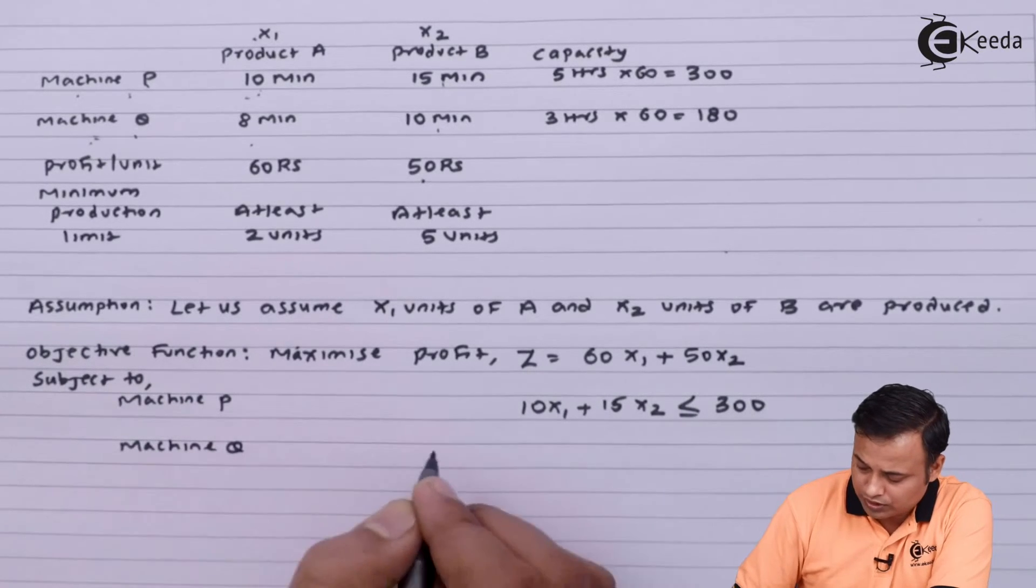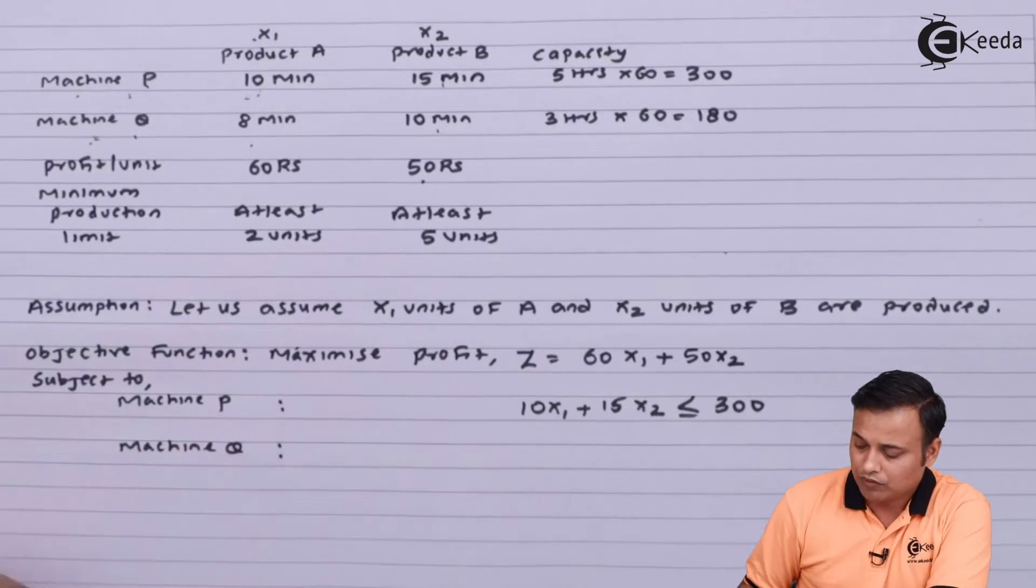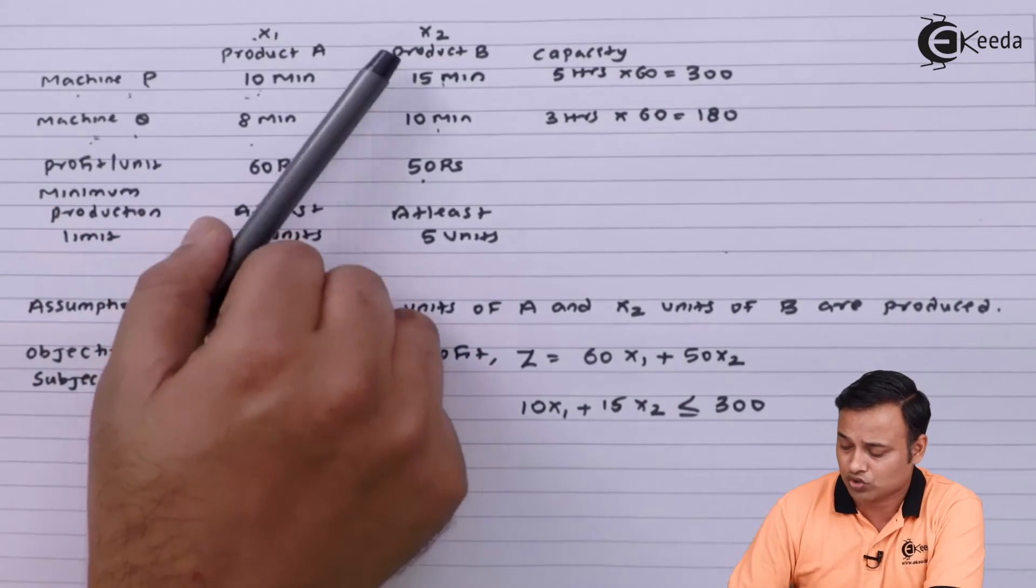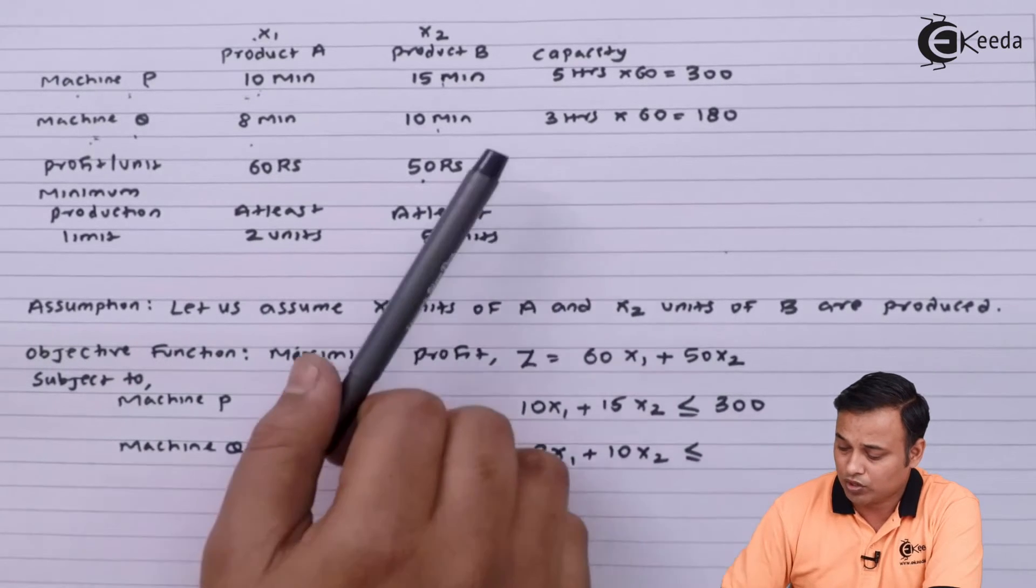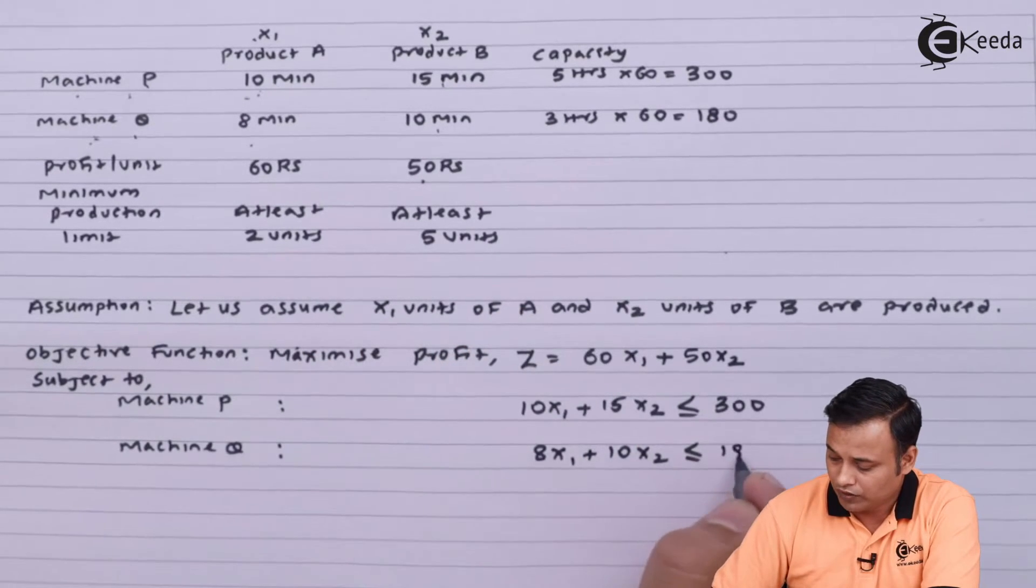My second constraint will be machine Q constraint. For machine Q it will be 8x1 plus 10x2 less than equal to 180 minutes.